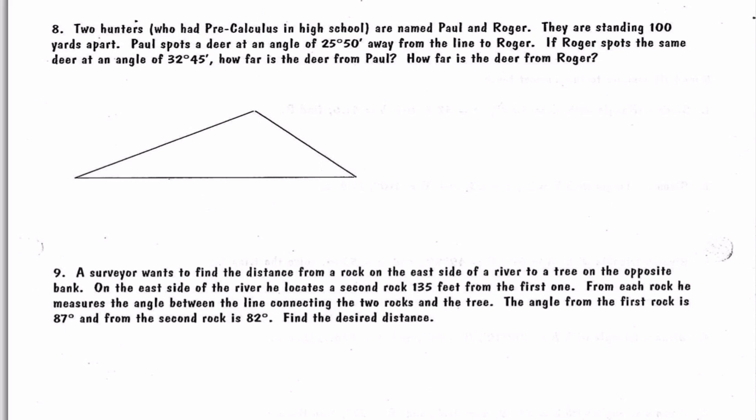So our first problem: Two hunters who had pre-calculus in high school are named Paul and Roger. They are standing 100 yards apart. Paul spots a deer at an angle of 25 degrees and 50 minutes away from the line to Roger. If Roger spots the same deer at an angle of 32 degrees and 45 minutes, how far is the deer from Paul and how far is the deer from Roger?